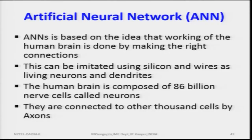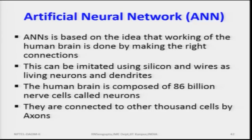If you consider the sole of your feet, there is feeling, but the level of sensitivity is much less. This nervous system — the passing of information through the neurons — will be replicated as an ANN, as we did for the artificial immune system. This can be imitated using silicon and wires as living neurons and dendrites, converting the nervous system into artificial neuron systems where information can be passed and processed. The human brain is composed of eighty-six billion nerve cells called neurons, and we will try to replicate the neuron in a very simplistic sense.